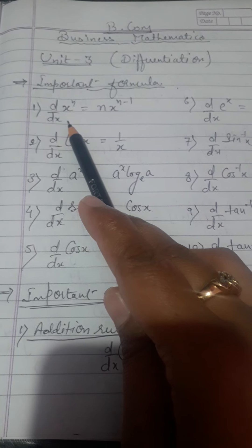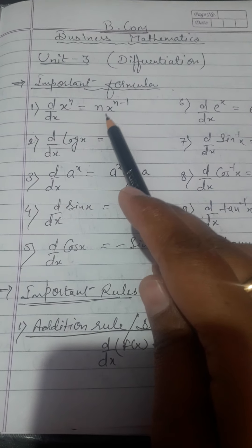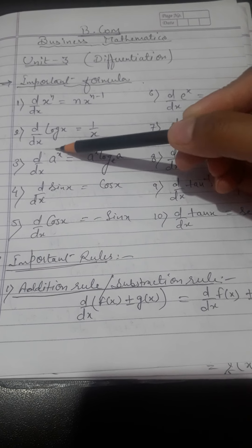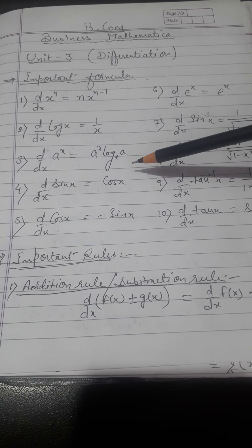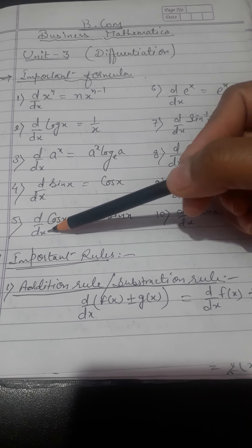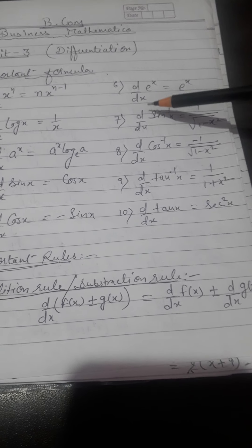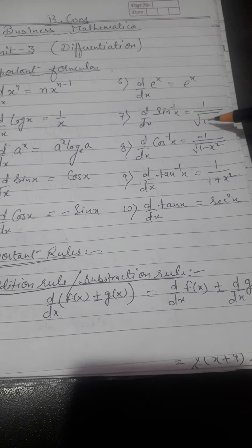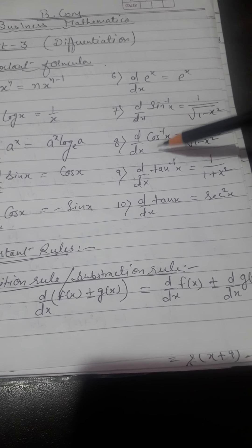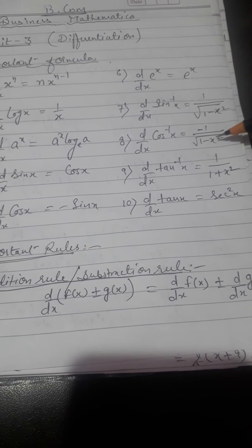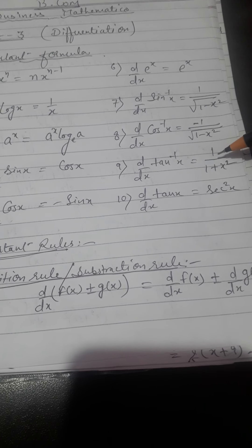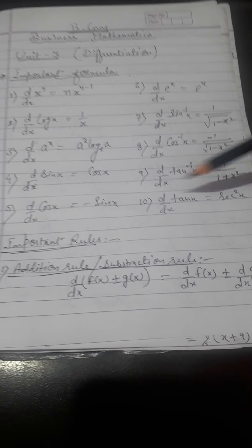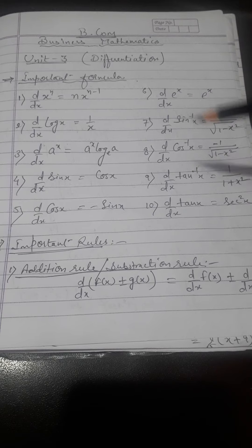So these are 10 important formulas of differentiation basically used in BCom syllabus Unit 3. The first formula: differentiation of xⁿ is n·x^(n-1). Differential of log x is 1/x. Differential of aˣ is aˣ·log a. Differential of sin x is cos x. Differential of cos x is minus sin x. Differential of eˣ is eˣ. Differential of sin⁻¹x is 1/√(1-x²). Differential of cos⁻¹x is -1/√(1-x²). Differential of tan⁻¹x is 1/(1+x²). And differential of tan x is sec²x.